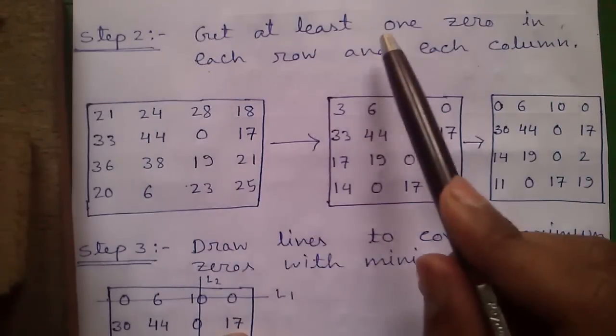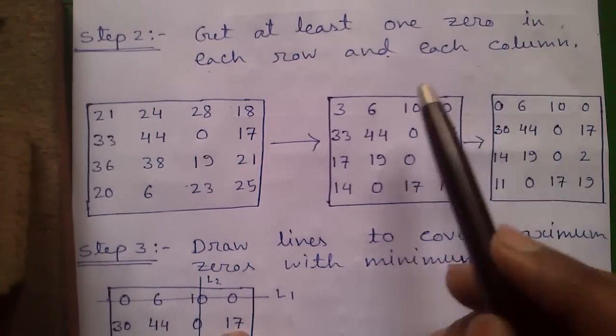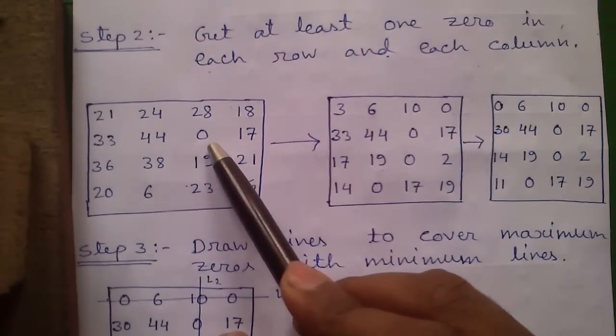Step 2: Get at least one zero in each row and each column. Again I have rewritten the matrix from the last step.